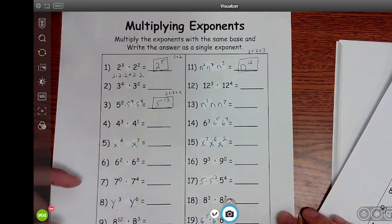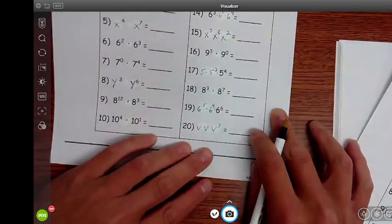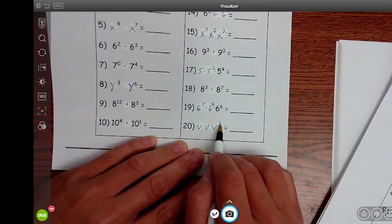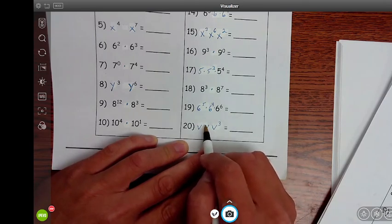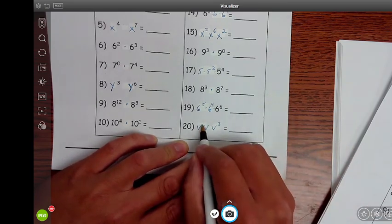All right, let's jump down to number 20. So for number 20, I have a V times V times V to the third. So if there is no exponent, that means there's a 1 exponent. These two Vs don't have an exponent. So there's a 1 there.